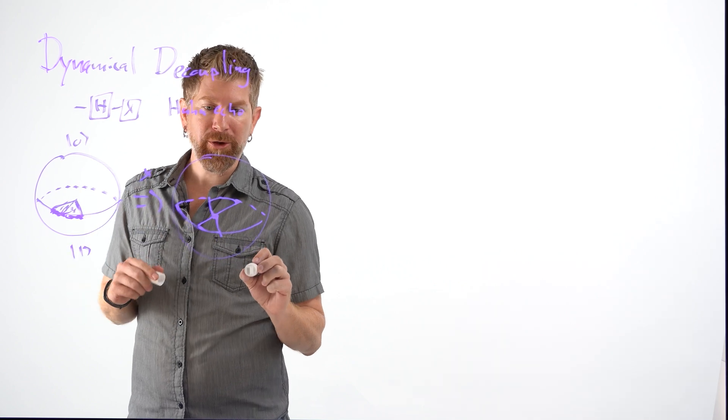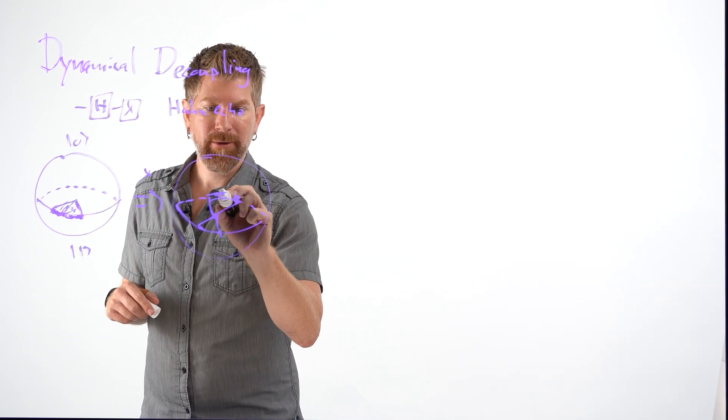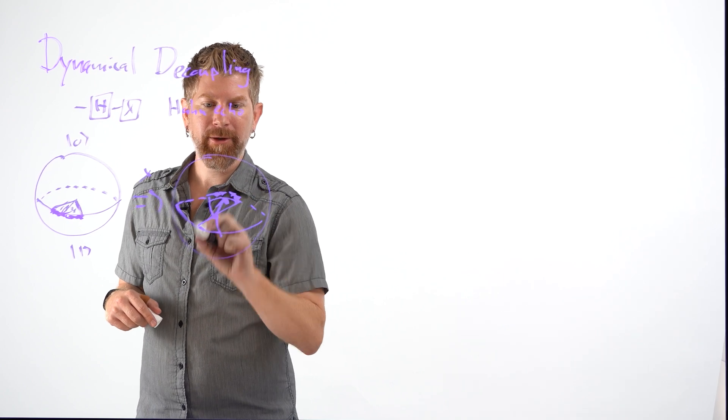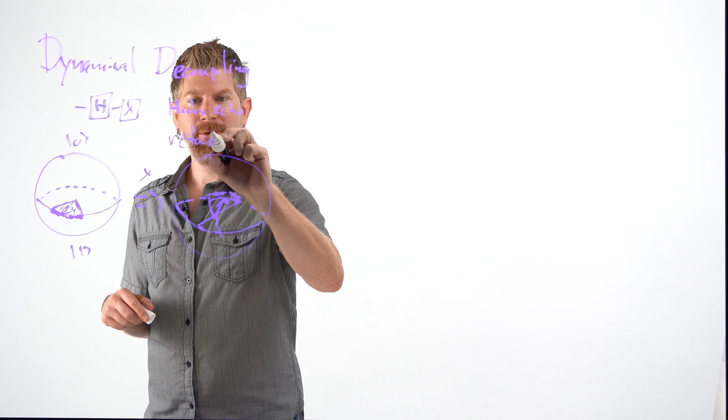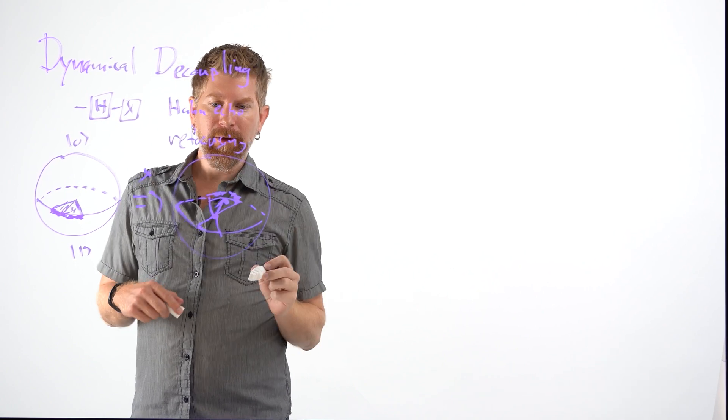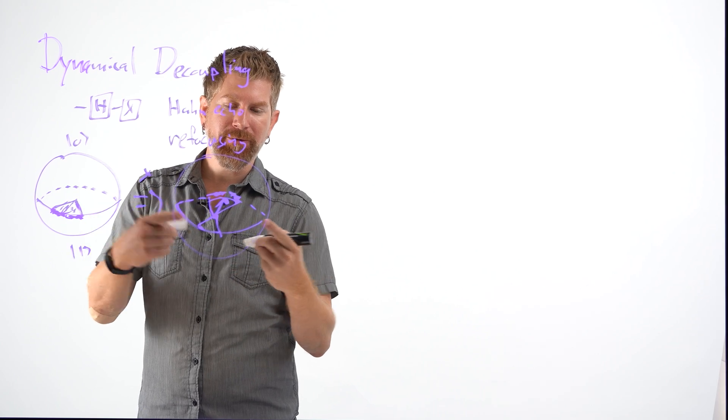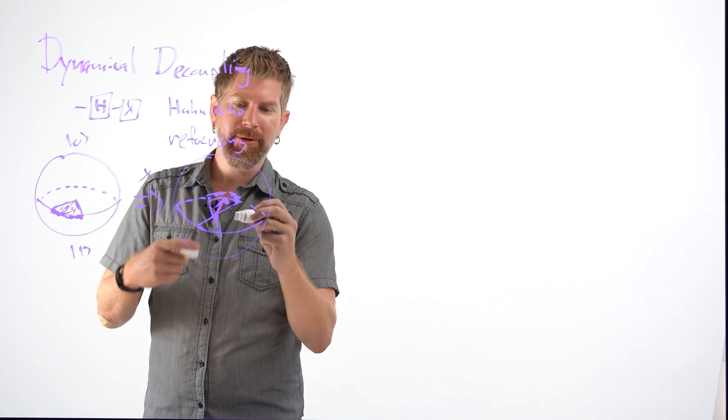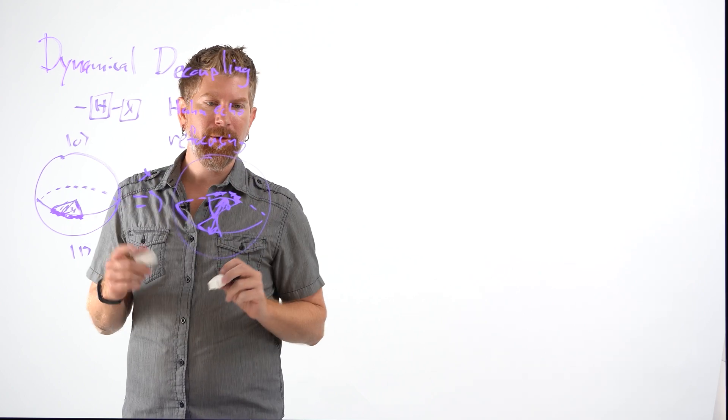Then what happens is the same noise processes that caused the drift originally are going to cause the qubit to drift back. And so this is also called a refocusing pulse. Because we've flipped the qubit state and the drift we had before is now refocusing the qubit back into the original one we had. And then we can always flip it back to get what we originally wanted.